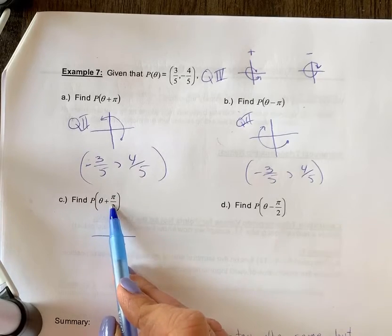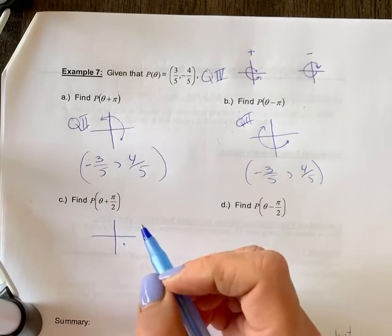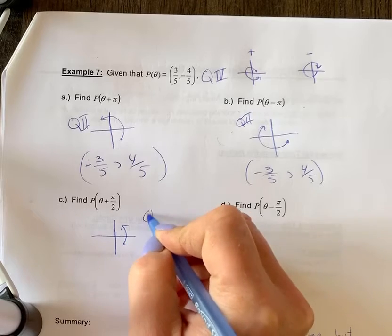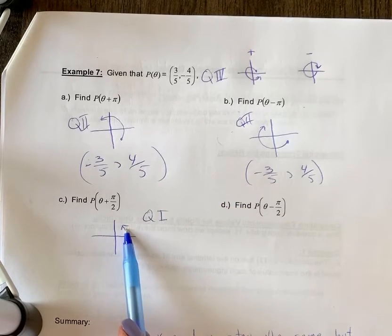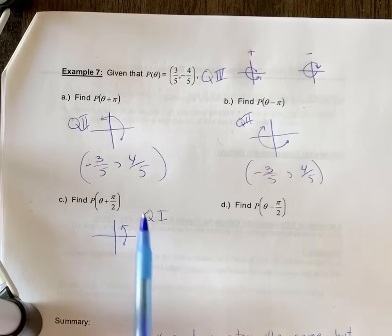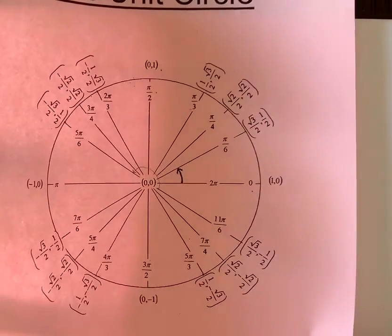So we're going to look at quadrant 4. Now if I rotate plus π by 2, that's 90 degrees, that's going to put me here into quadrant 1. So my CAST rule or my rules for quadrant 1 are that both x and y are going to be positive. But what happens to the point? And again, I need another picture of my unit circle. This one's drawn to scale so I can use that.